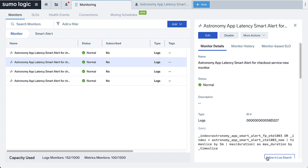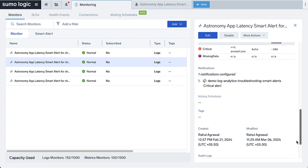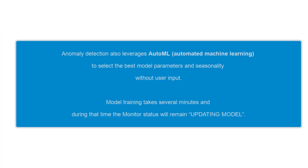Upon saving, a machine learning model is trained using historical data to learn baselines that reflect the expected value of the signal after factoring data seasonality, which can be hourly, daily, or weekly. Anomaly detection also leverages AutoML — automated machine learning — to select the best model parameters and seasonality without user input, a unique aspect of our approach. Remember, model training takes several minutes, and during that time, the monitor status will remain updating model.